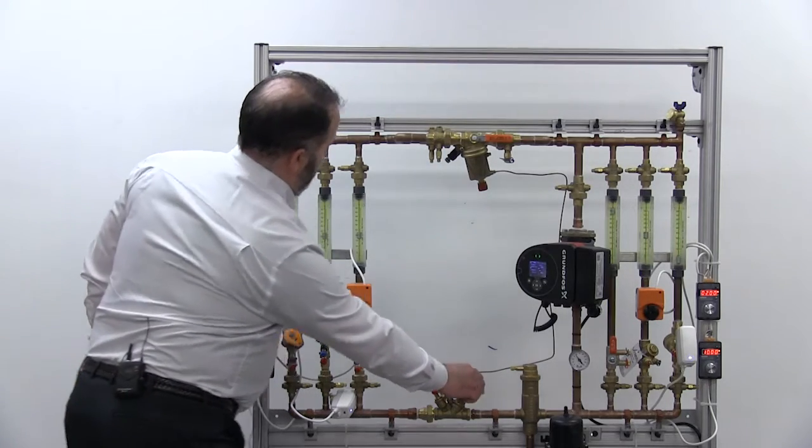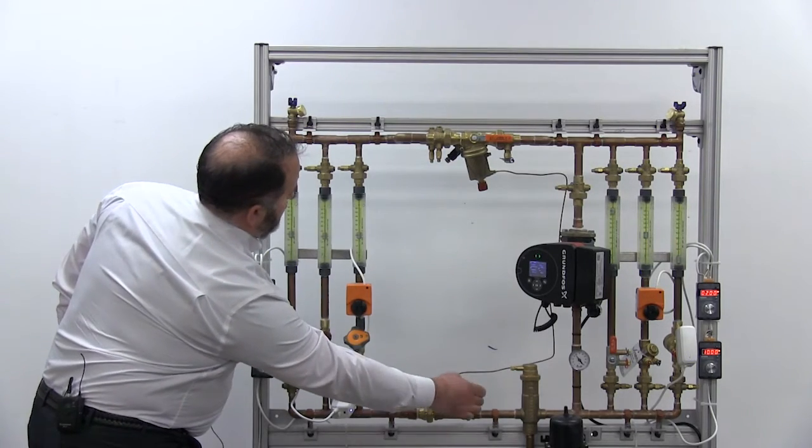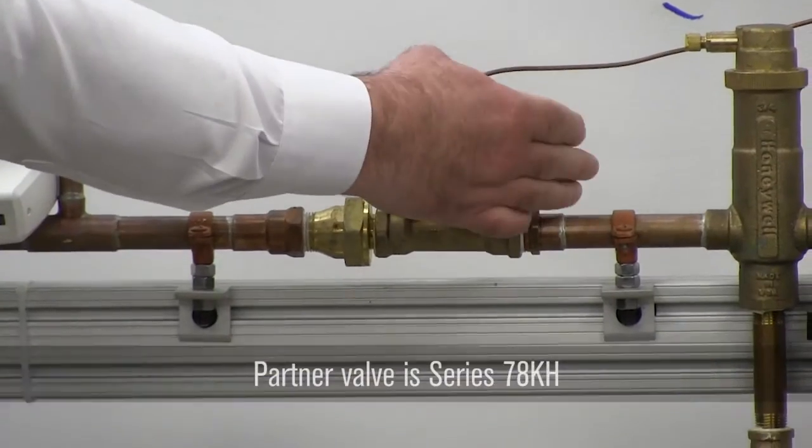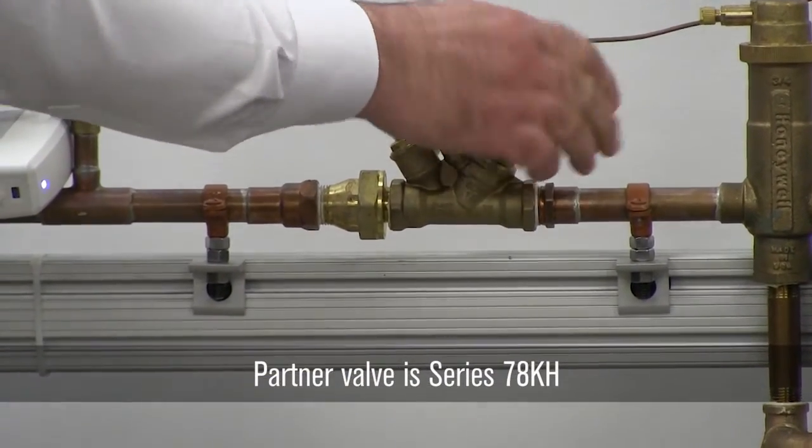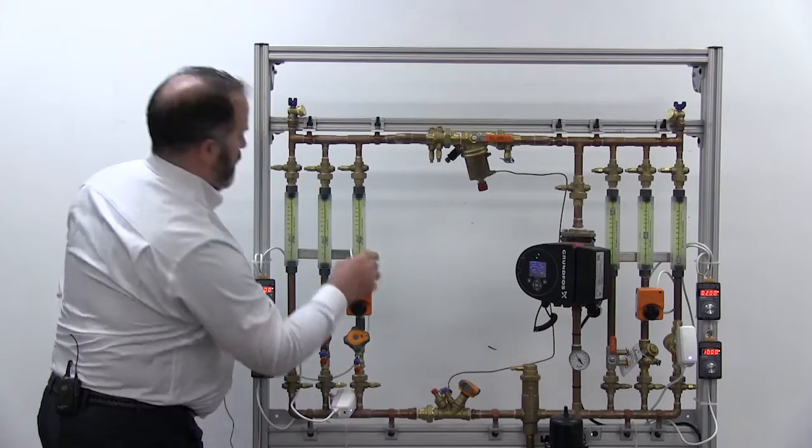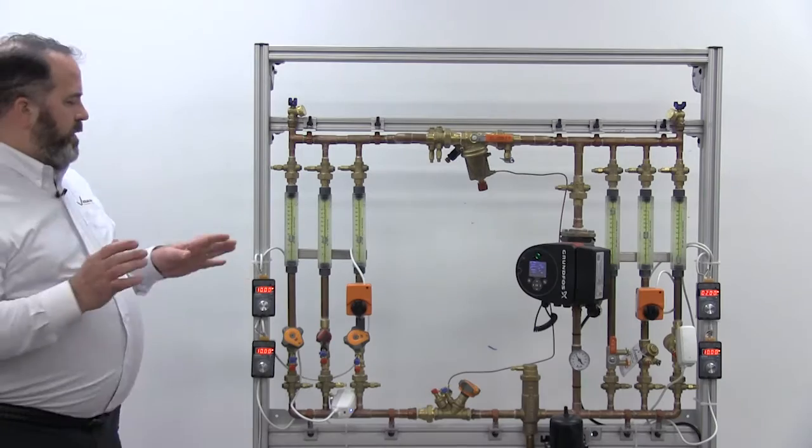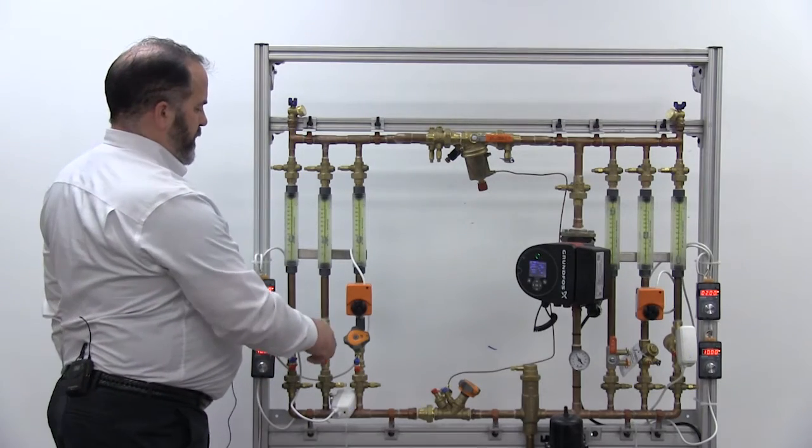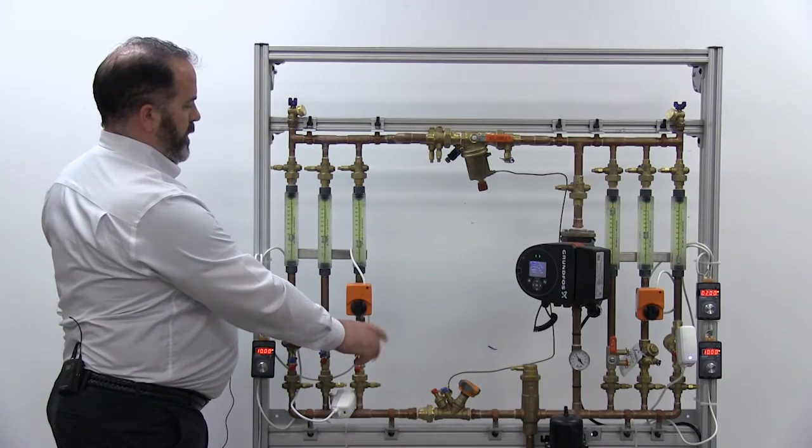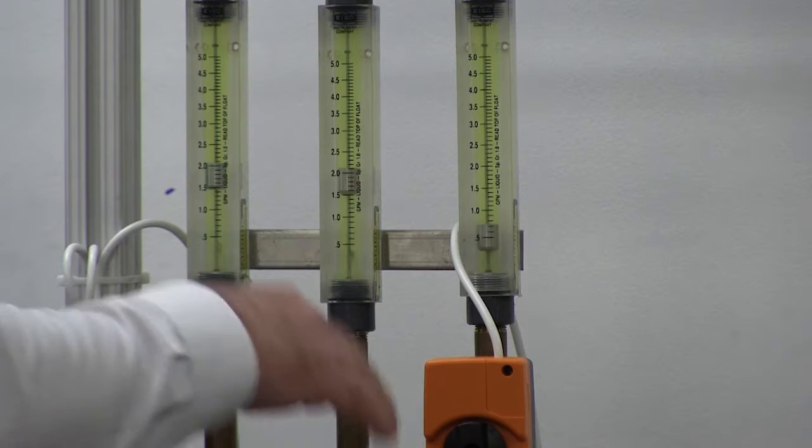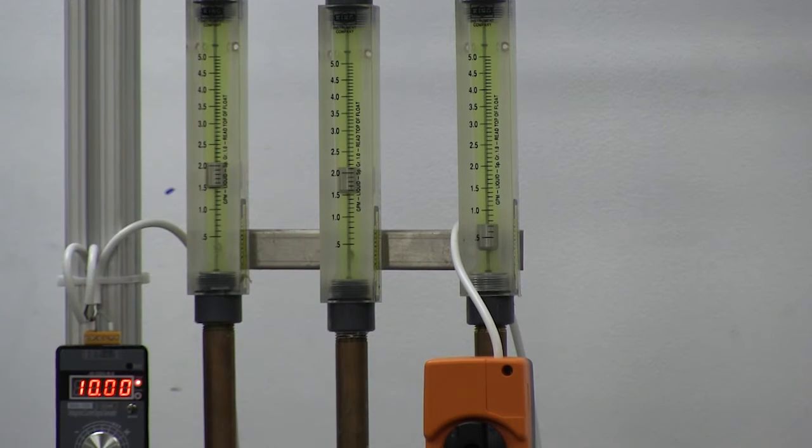So at that point we can use a partner valve to balance the system further and get ourselves down to what we'll call our 2 GPM design flow for each of these coils. You'll notice that as we make changes within this part of the system, as I close this valve down, these valves start to open further or the flow starts to go up into the other two coils and I'm winding up overflowing those two coils.